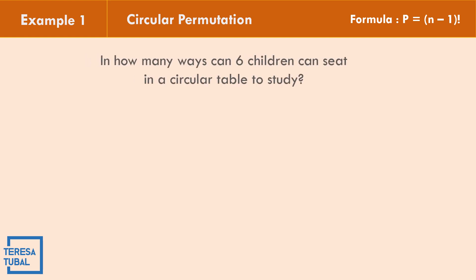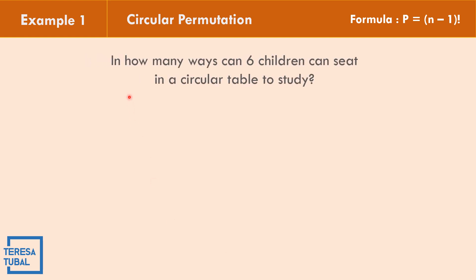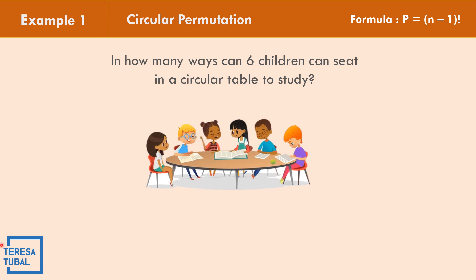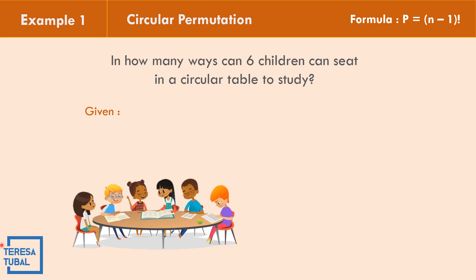In example number 1, in how many ways can 6 children sit at a circular table to study? As you can see in the illustration, we have 6 children seated at a circular table. The given is n equals 6, since we count 6 children.